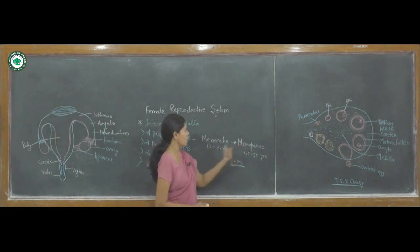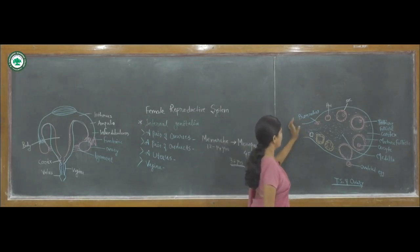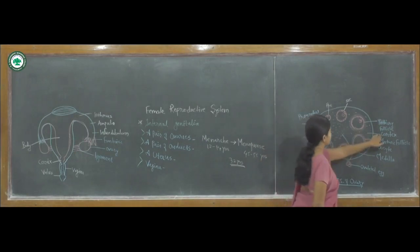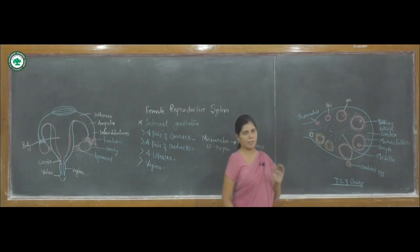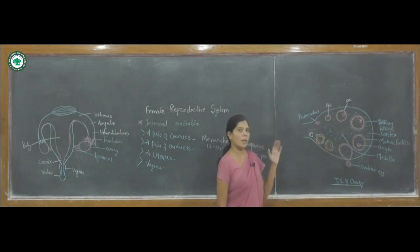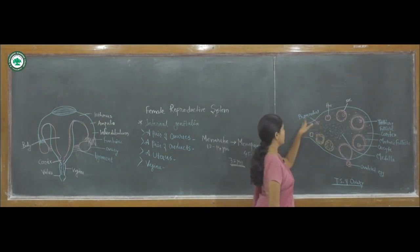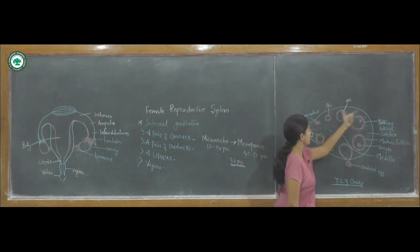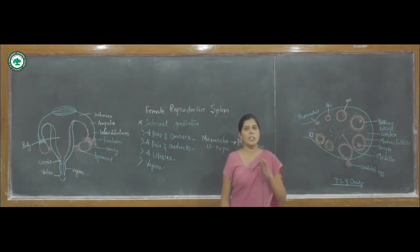Now, in the transverse section (TS) of the ovary, there are two regions: the middle region is the medulla, and around the medulla there is the cortex region. In the cortex region, a number of primordial follicles are present before the birth of the female baby. The development from primordial follicle to primary follicle, to secondary follicle, then tertiary follicle, goes on at puberty, and these changes take place each menstrual cycle.